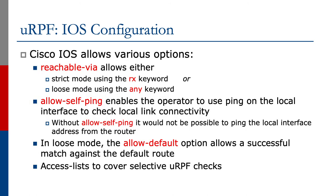Cisco IOS allows various options. To summarize: 'reachable-via' means strict mode is available using the 'rx' keyword, and loose mode is available using the 'any' keyword. 'Allow-self-ping' enables the operator to use ping on the local interface to check local link connectivity — without it, it would not be possible to ping the local interface address from the router. In loose mode, the 'allow-default' option allows a successful match against the default route if required. There are also access lists available to cover selective URPF checks.